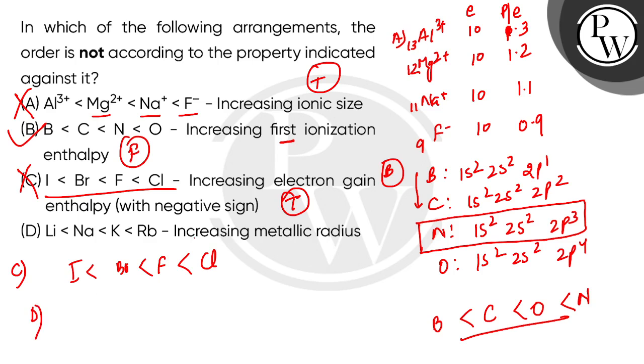In D, increasing metallic radius - let's talk about metallic radius. In a group when we go down, the size increases. So the smallest size will be lithium, then sodium, then potassium, and the largest is rubidium. These are group one elements, so this order is true. So only B option is the correct answer, rest are incorrect. I hope you understood, thank you.